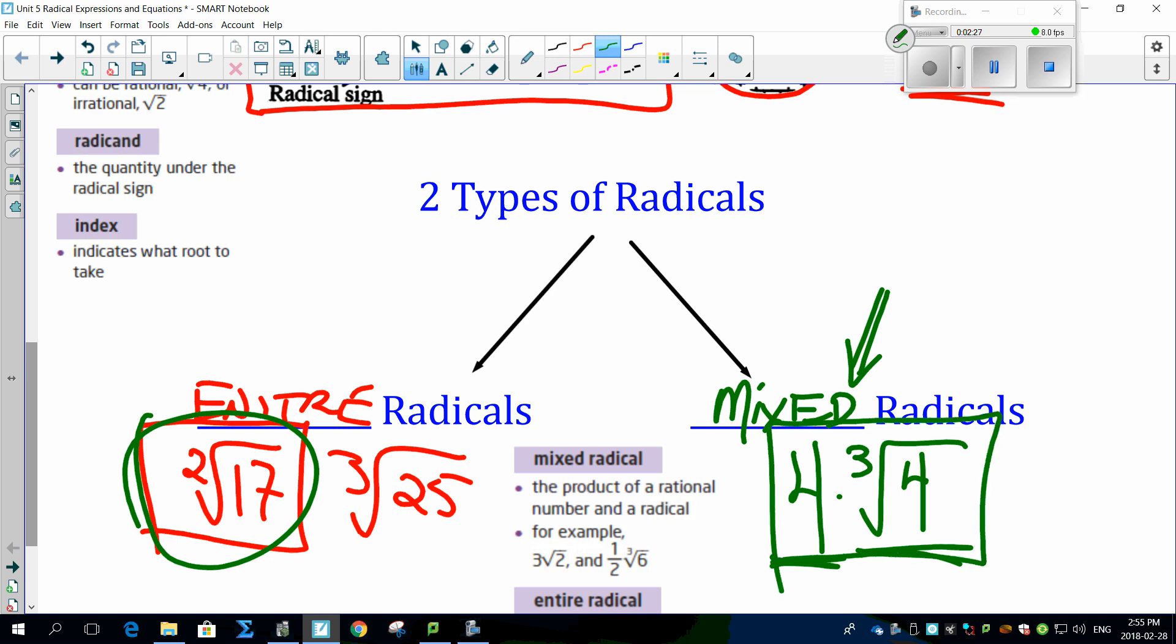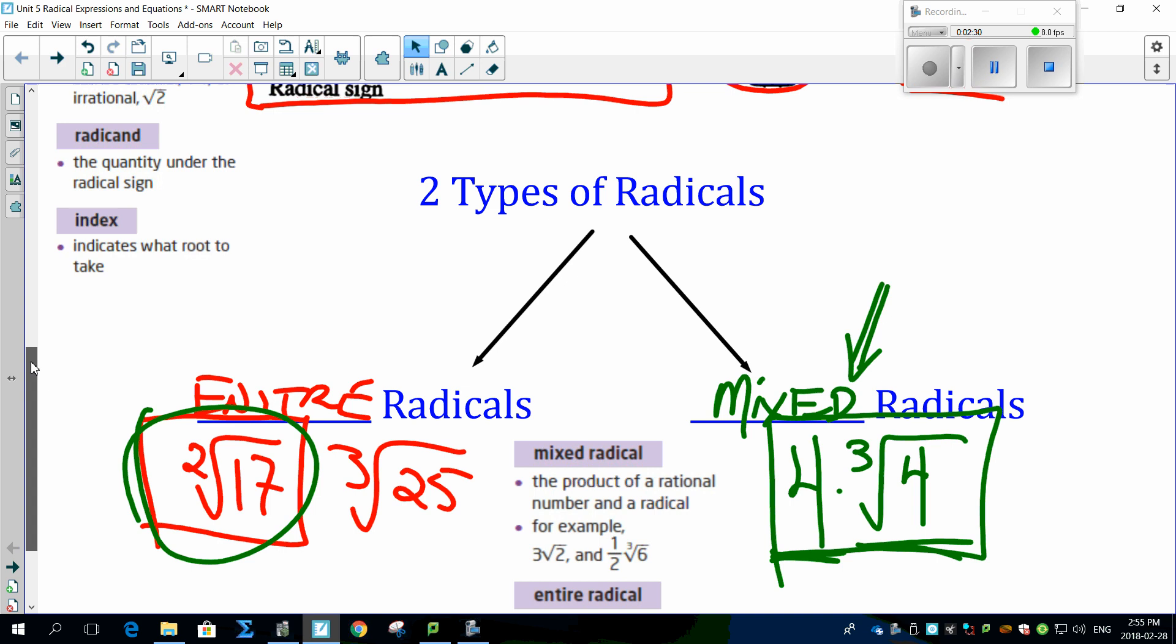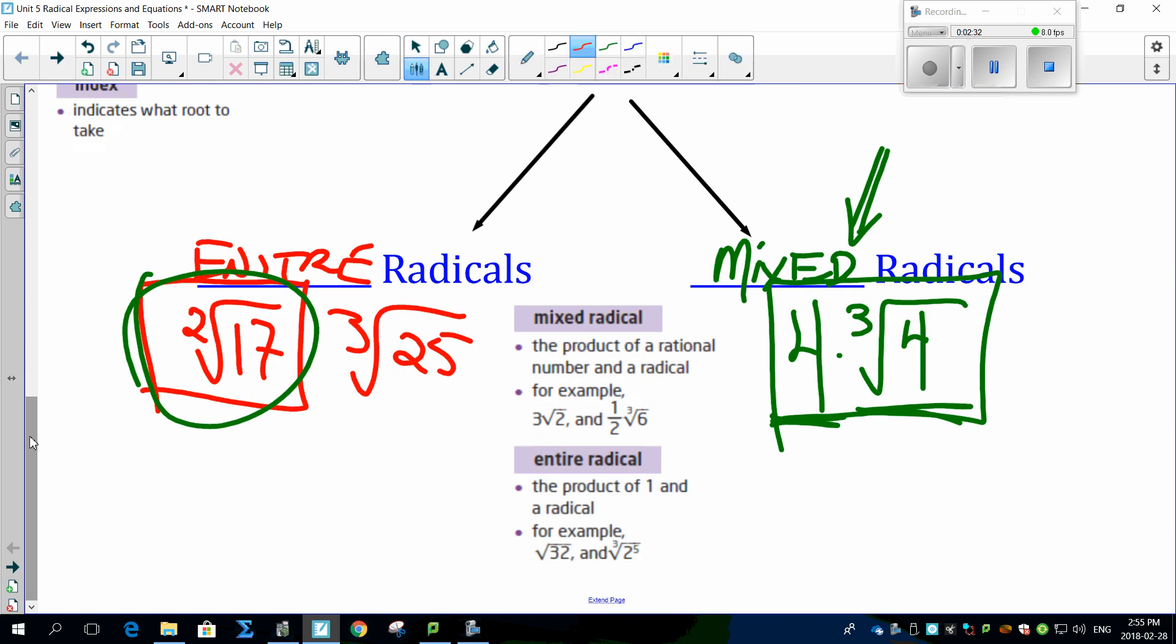Look at the definitions here. A mixed radical is the product of a rational number and a radical. For example, one-half times the cube root of six - there's that number up front. An entire radical is just the radical - the root of 32, cube root of 2, root 2 to the power of 5, whatever it is. The two important things to note: an entire radical has no number up front, and a mixed radical has some sort of number up front.